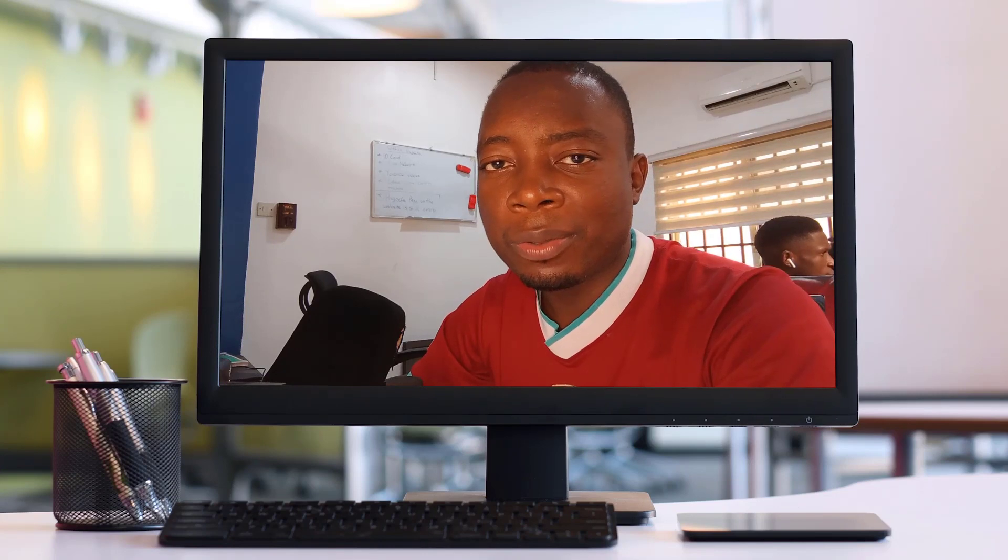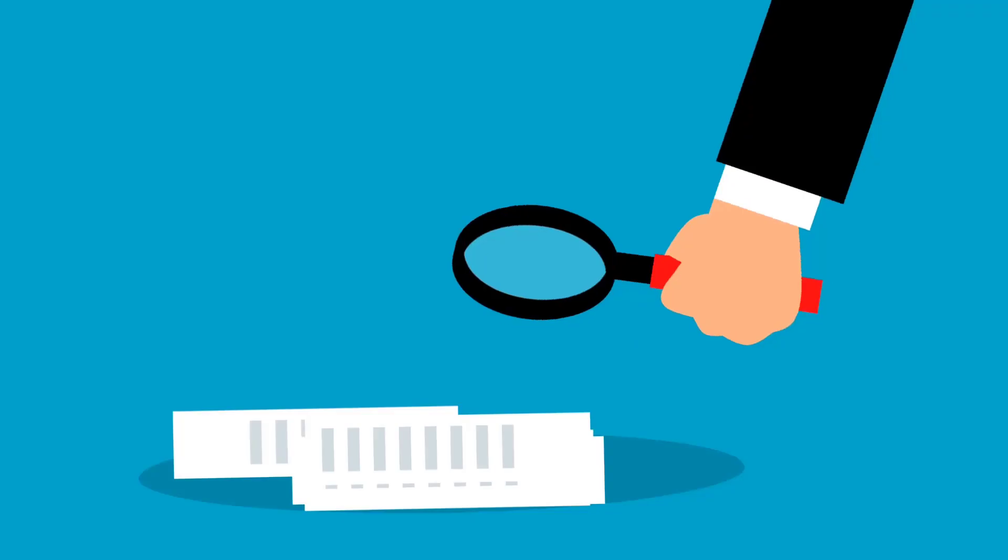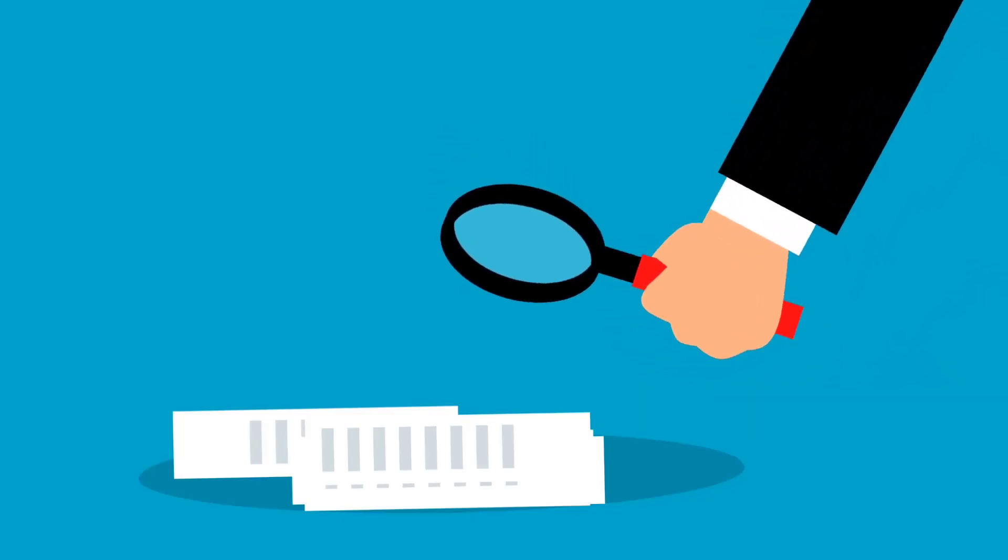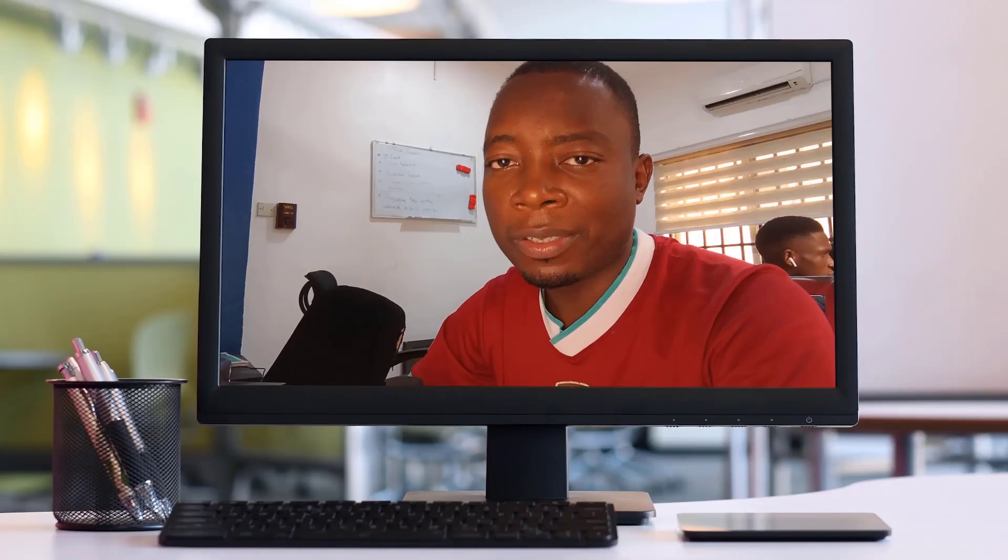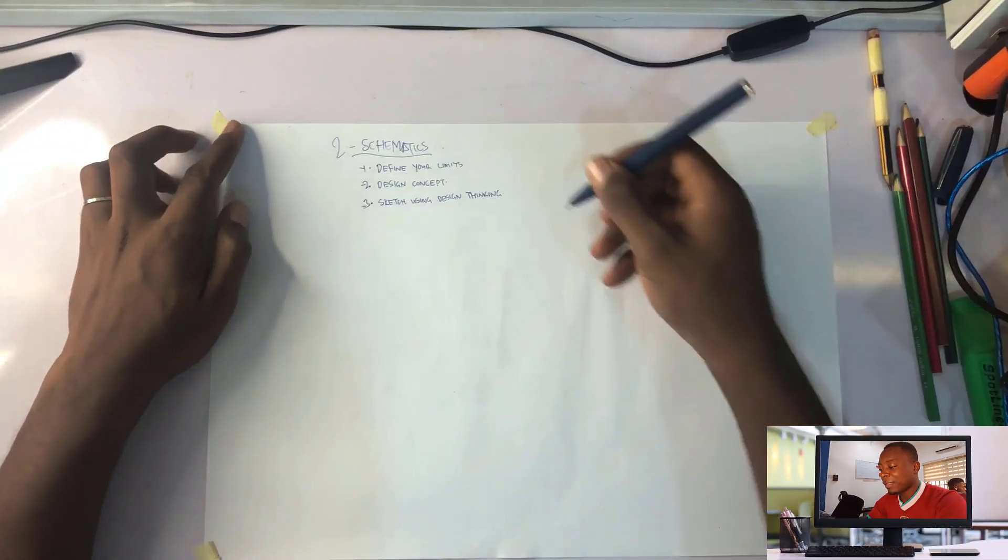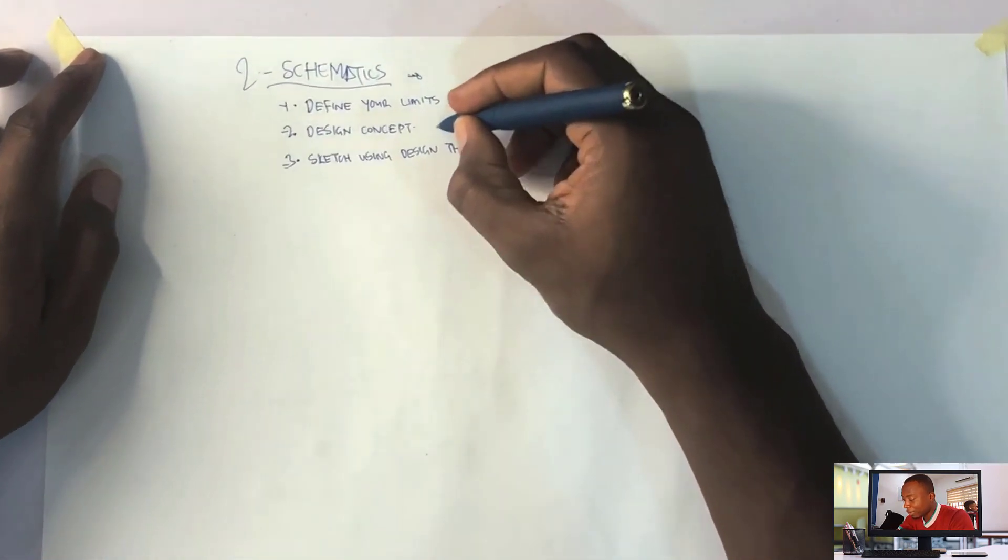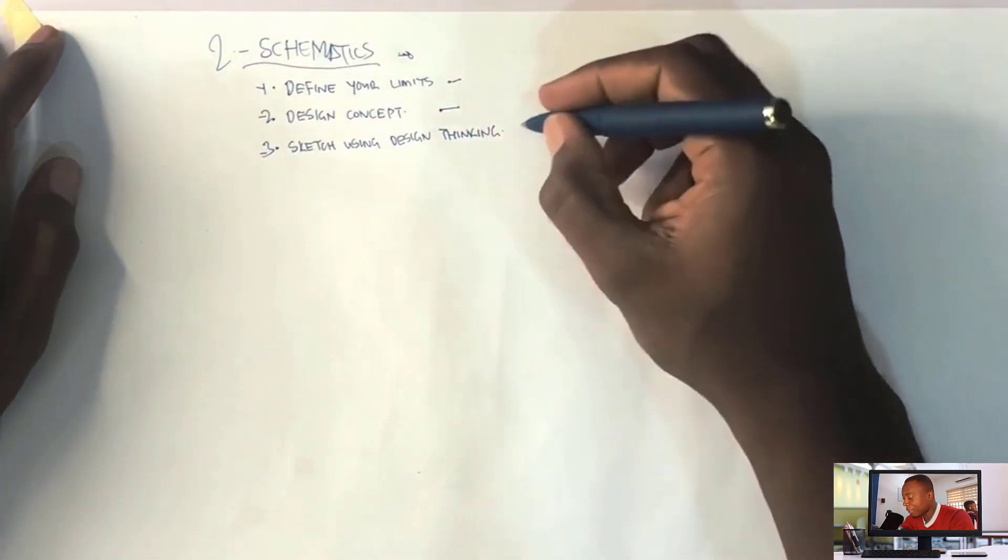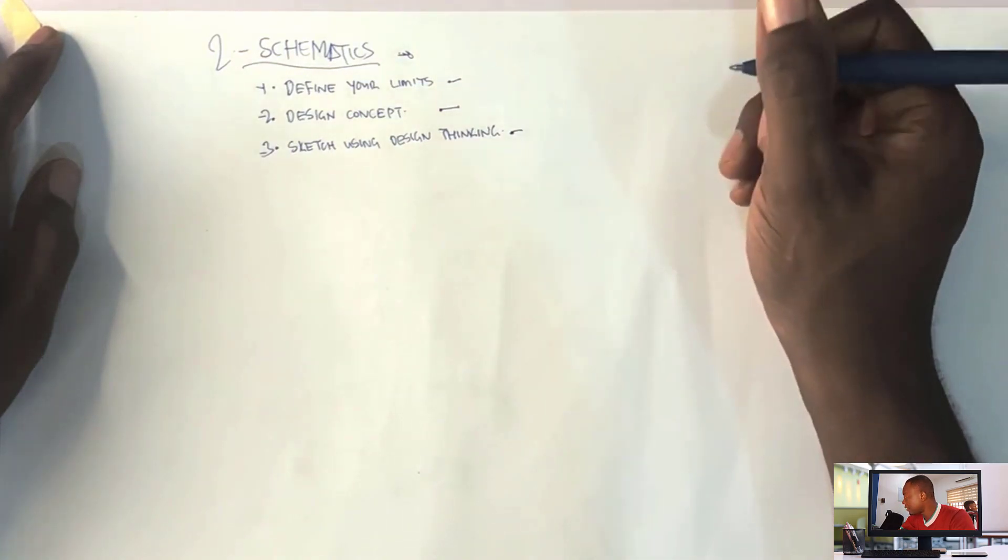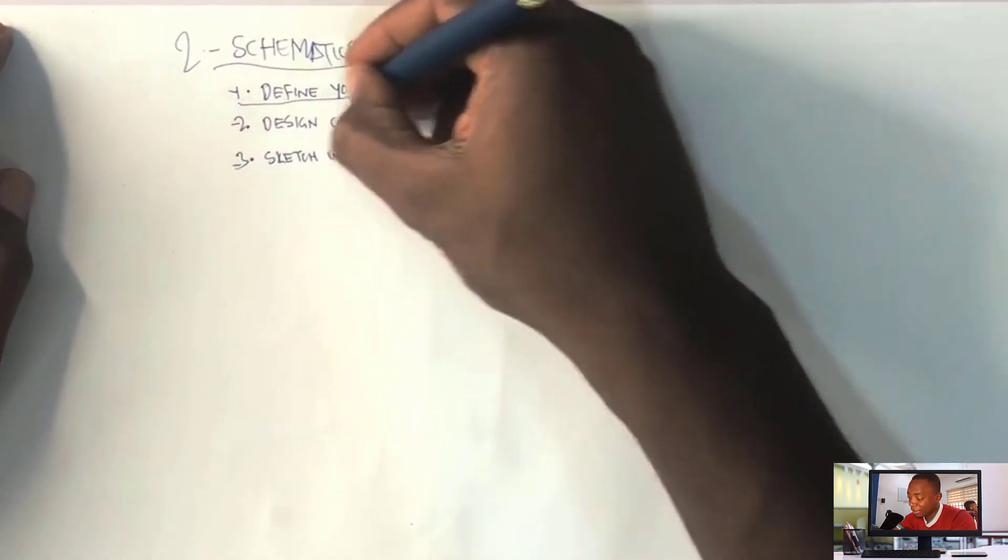In the schematic design stage, you take your design, analyze it, and then begin to bring out sketches and design solutions and options. So let's begin. I'm going to approach schematics in three parts: we're going to define our limits, develop a design concept, and then sketch using design thinking. The first part is define your limits.